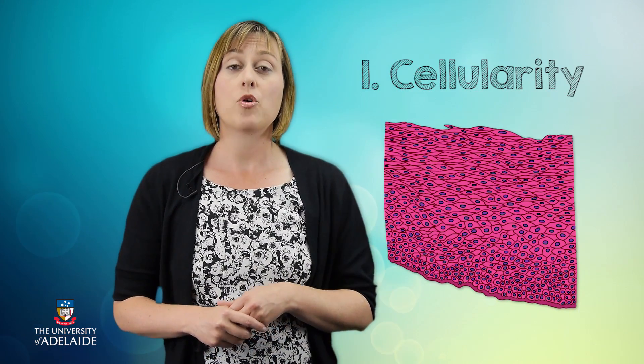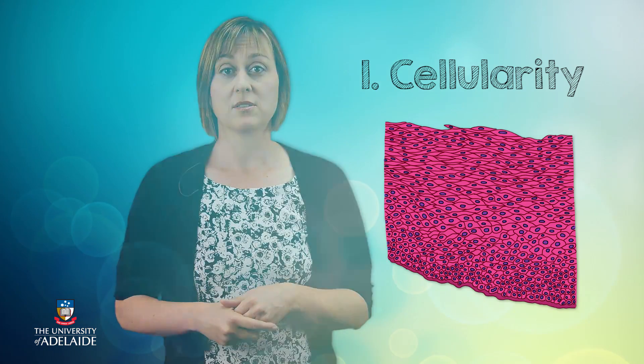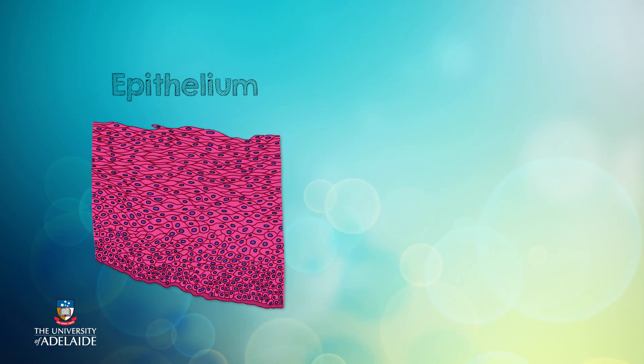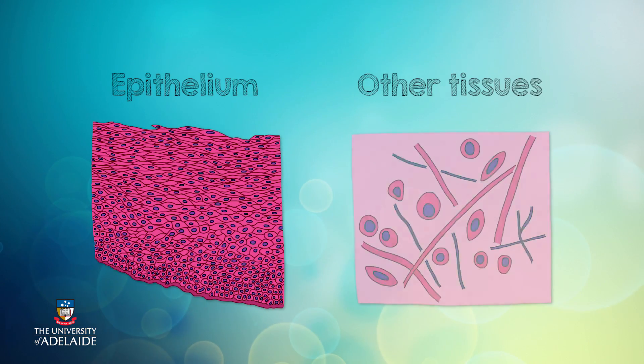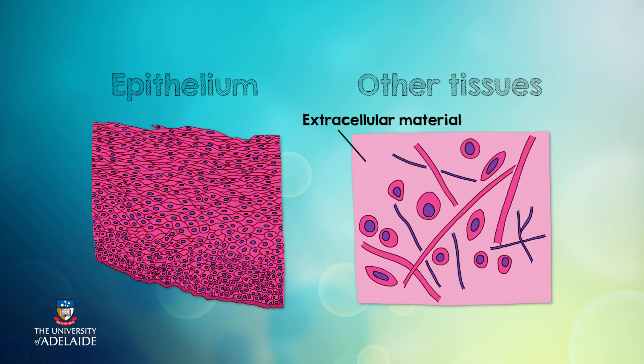Cellularity, as the name suggests, means that the epithelium is made up almost entirely of cells. In other types of tissue, the cells are spread far apart and are separated by lots of extracellular material.